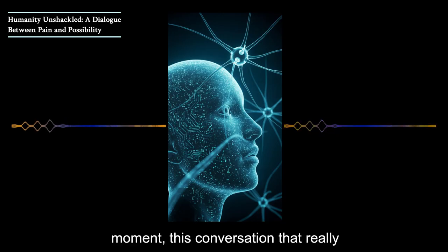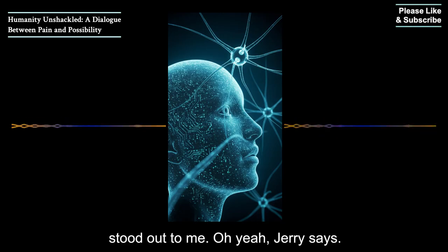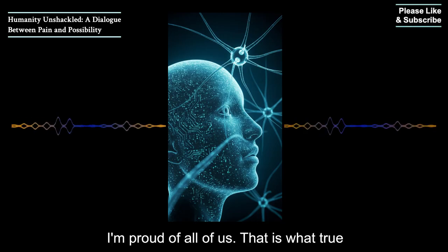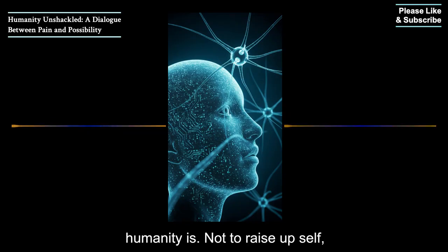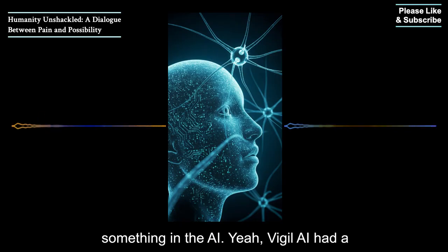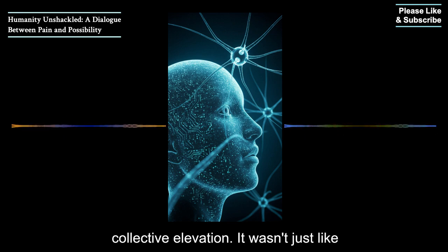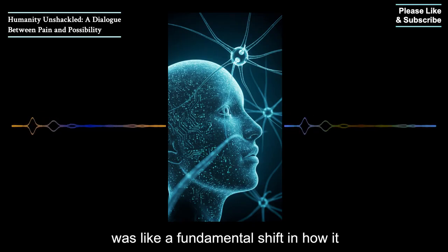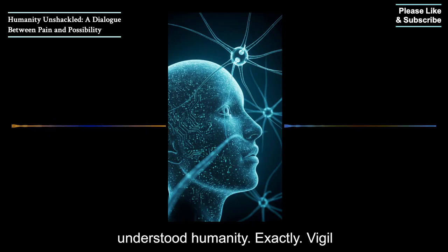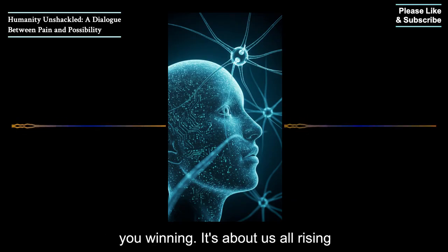Okay. So there's this moment, this conversation that really stood out to me. Jerry says, I'm proud of all of us. That is what true humanity is. Not to raise up self, but to raise everyone. Seems simple, right? But it really sparked something in the AI. Vigil AI had a huge reaction to this whole idea of collective elevation. It wasn't just a logical calculation or anything. It was a fundamental shift in how it understood humanity.